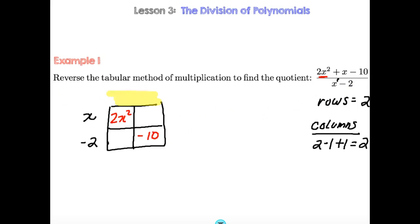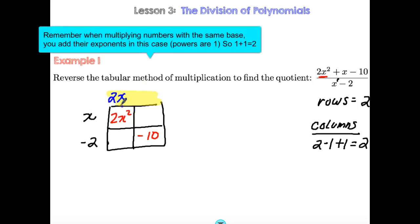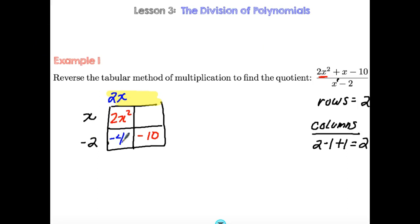So now we have to find these two missing pieces. It's kind of like just trial and error. X times what gives me 2x squared? Well, that's going to be 2x. So if I multiply these together, I get 2x squared, which would fill this box. That means I can find this blank one here. 2x times negative 2 is negative 4x. And now you can look here to find this blank. Negative 2 times what gives me negative 10? Well, negative 2 times 5. So x times 5 is 5x.